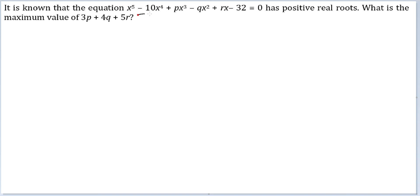Sum of roots is 10, product of roots is 32. Five numbers add up to give me 10, five numbers multiply to give me 32. The only way this is possible is if all the roots are identical, which is 2.